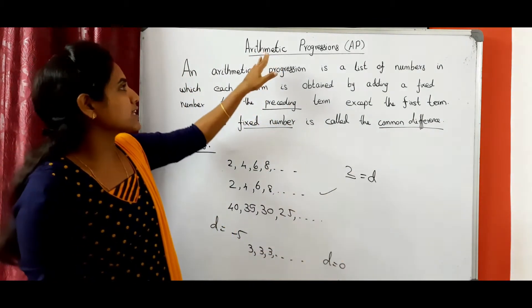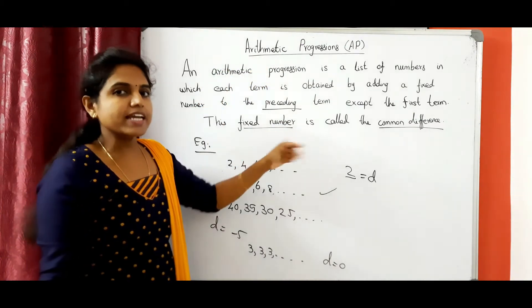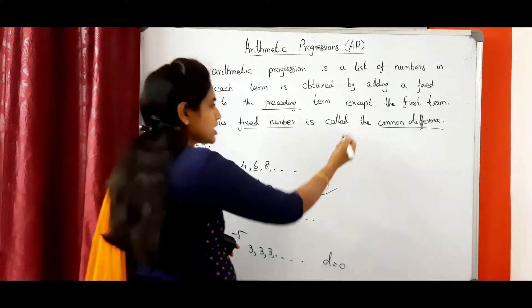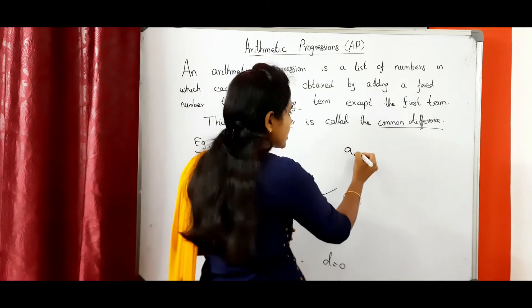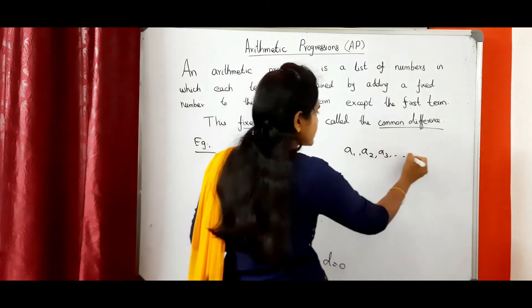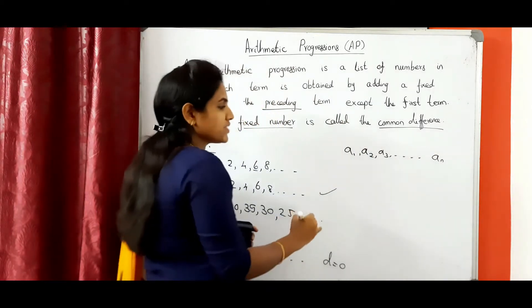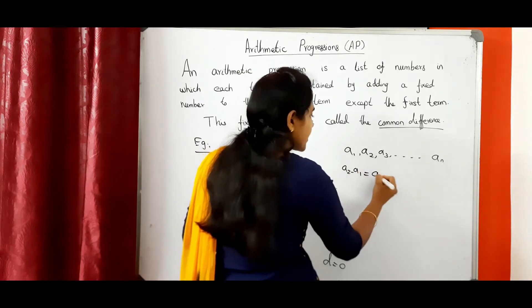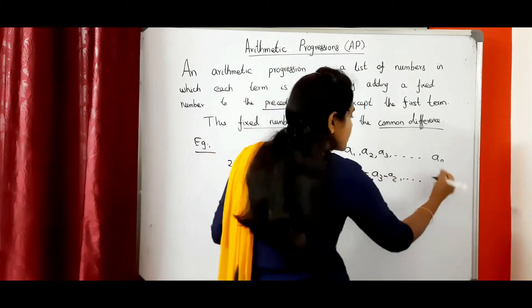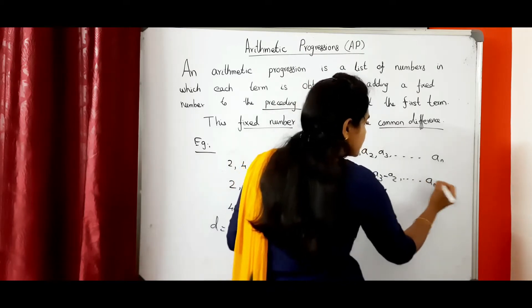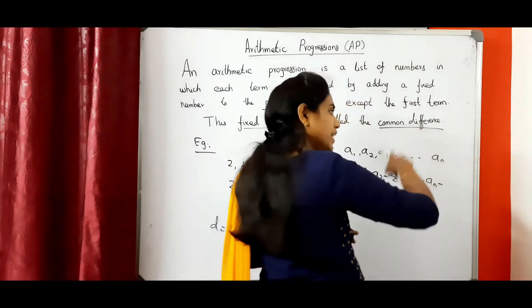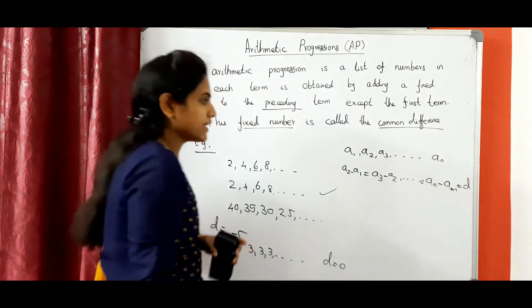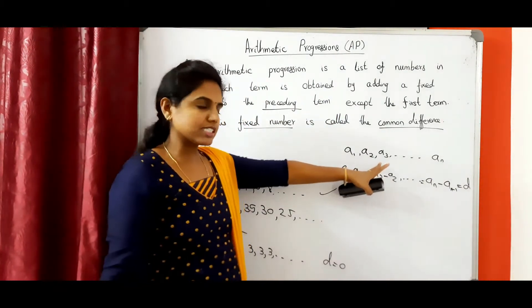So simply, Arithmetic Progression means it has a common difference. Then we can say it is an arithmetic progression. I am going to explain how we can find the common difference. Suppose the first term is a1, second term is a2, third term is a3, etc. The nth term is an. So common difference D equals second term minus first term: a2 minus a1, and a3 minus a2, etc. The last term an minus the before term an-1. All are equal. That is called the common difference D. Then only we can say it is an AP, otherwise it is not an AP.